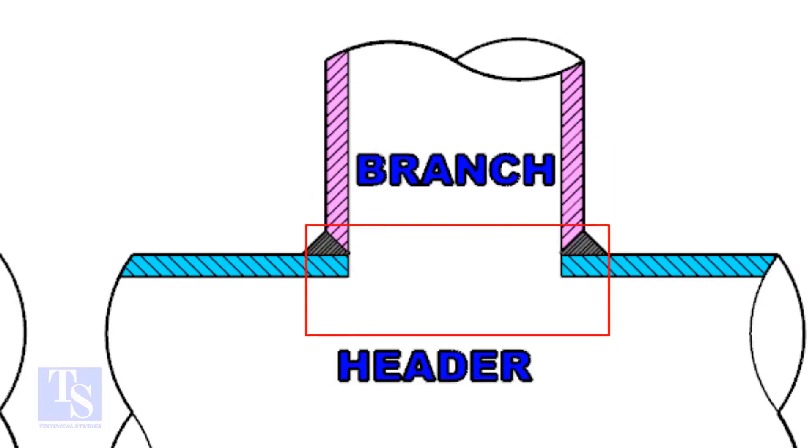And on the header pipe, a hole is there. The diameter of the hole on the header pipe is the same as the inside diameter of the branch pipe.